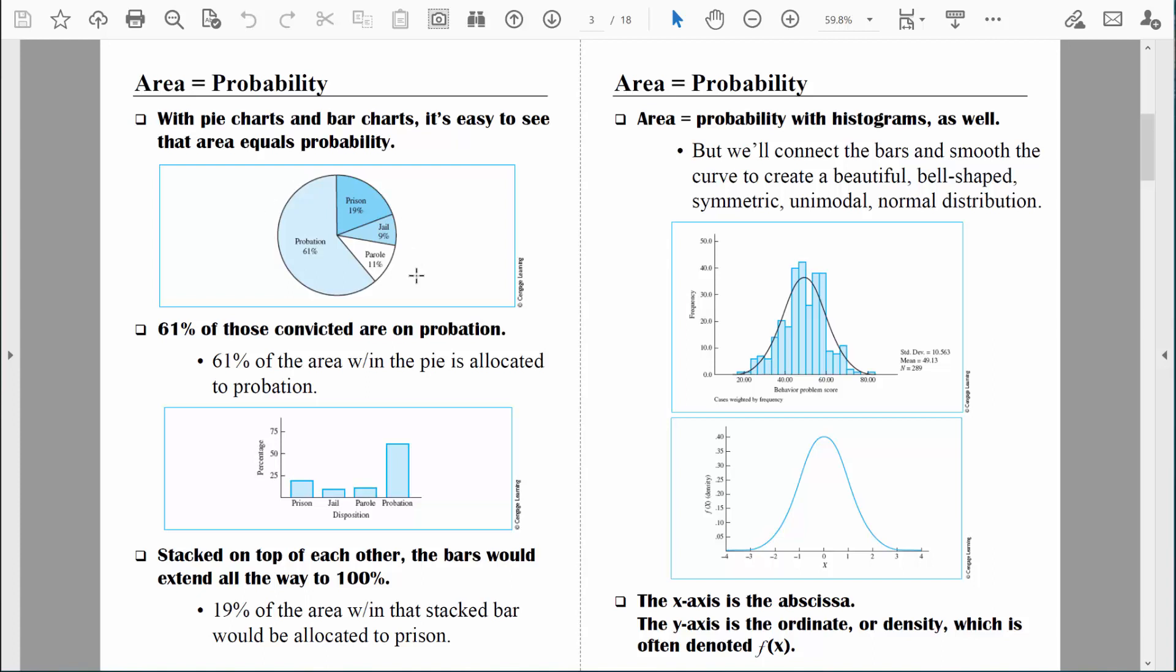This pie chart right here represents all people who have been convicted of some crime. These people are either on probation, or they're in prison, or they're in a county jail, or they're on parole. According to the pie chart, 61% of the people are on probation.